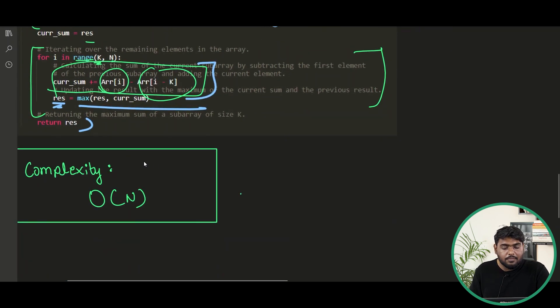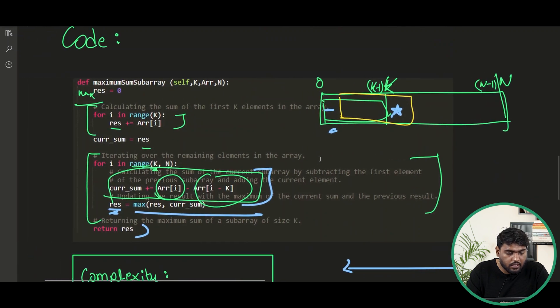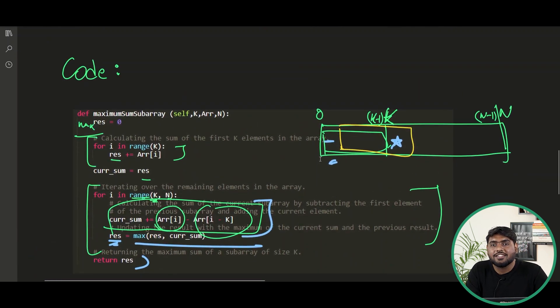Now the complexity it might take is obviously O(n). We are just traversing the array for one time and we are not performing any other operation. So just let's try to run this code against all the test cases.